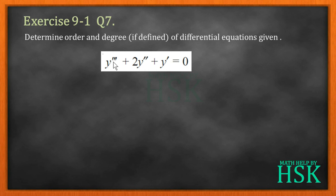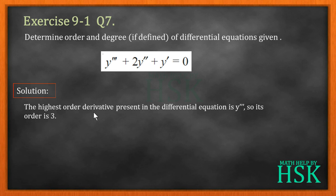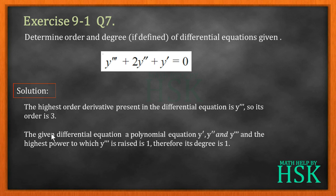In question number 7, the differential equation is y''' + 2y'' + y' = 0, that is the third order derivative plus 2 times the second order derivative plus the first order derivative of y with respect to x equals 0. The highest order derivative present is y''', so its order is 3. The third order derivative is raised to the power of 1 and the equation is polynomial in all derivatives, therefore its degree is 1.